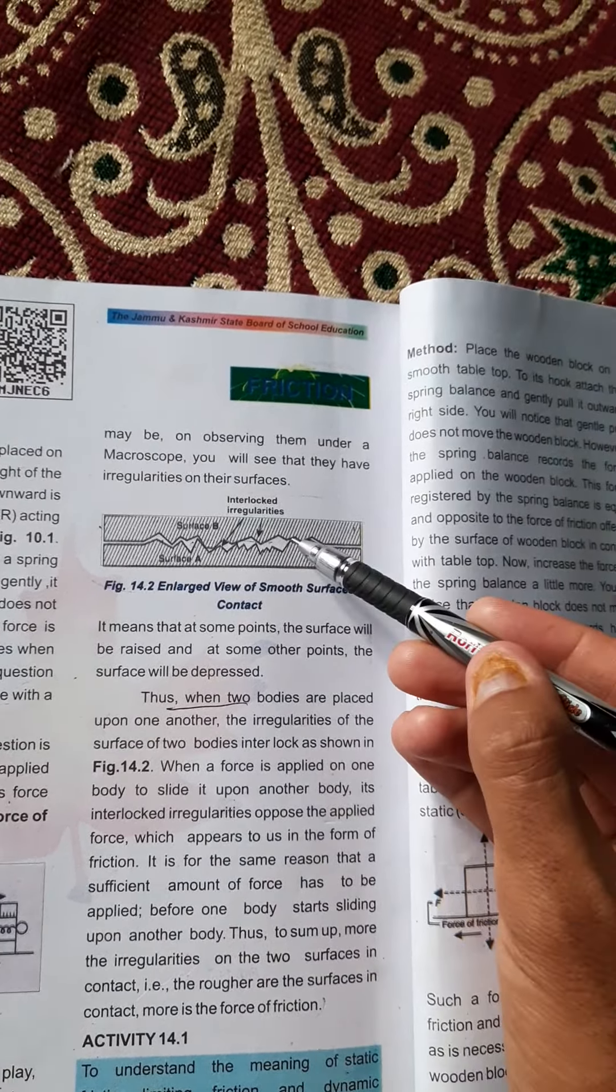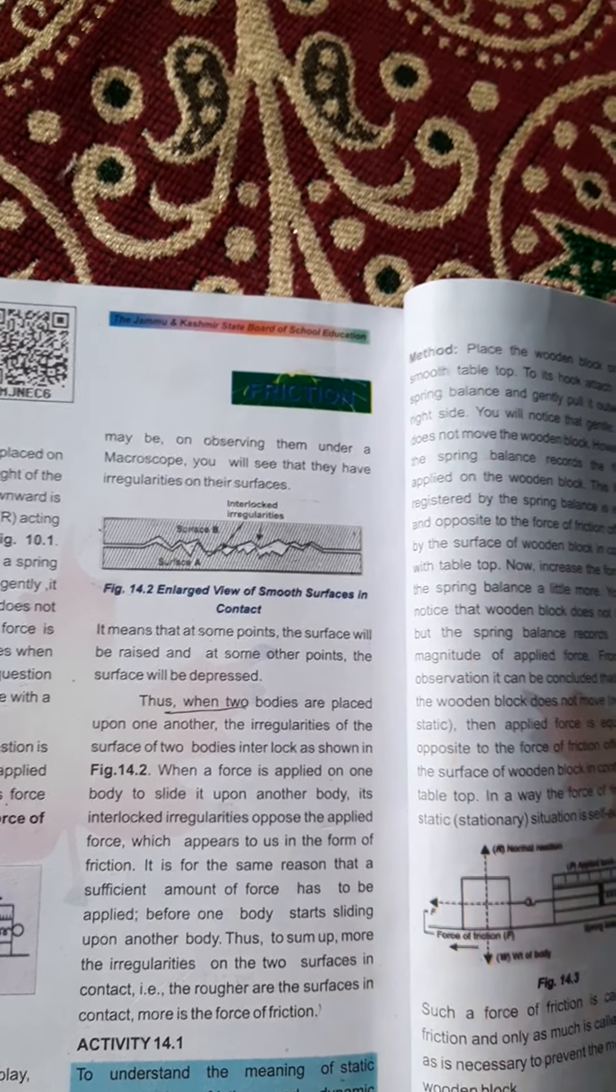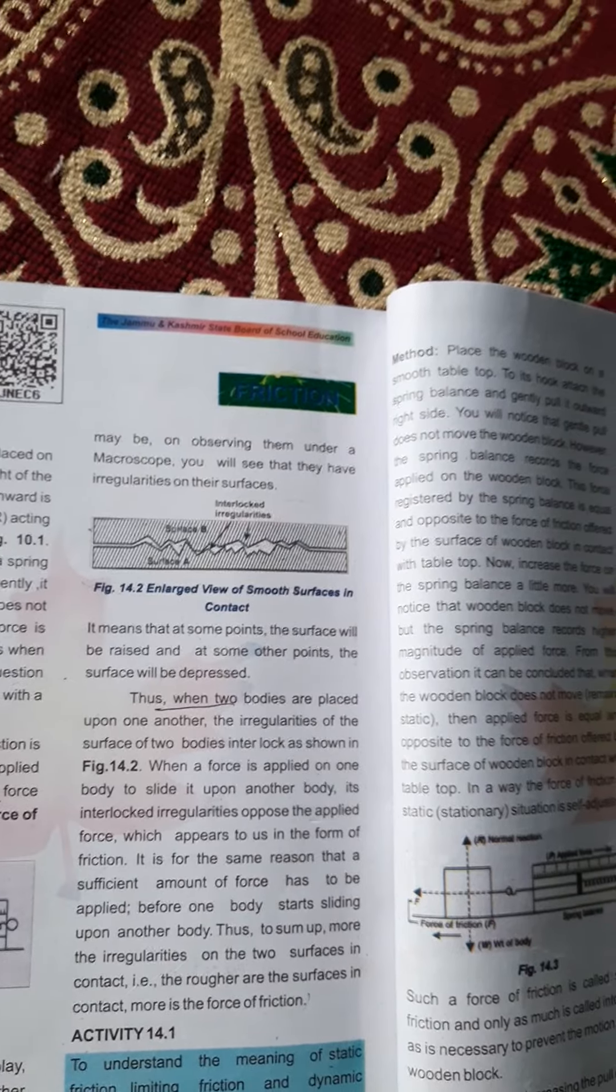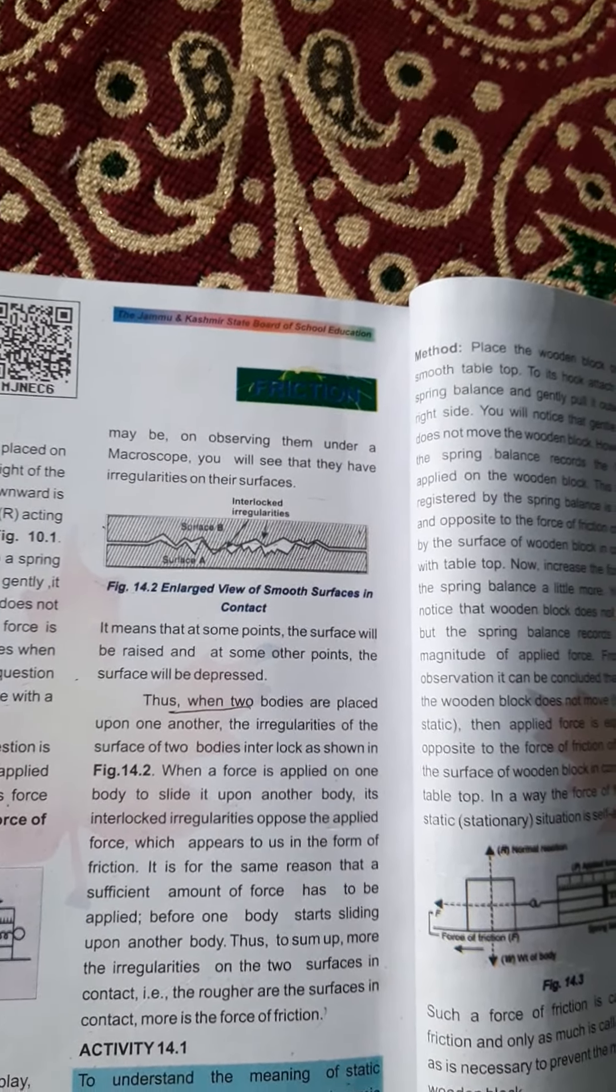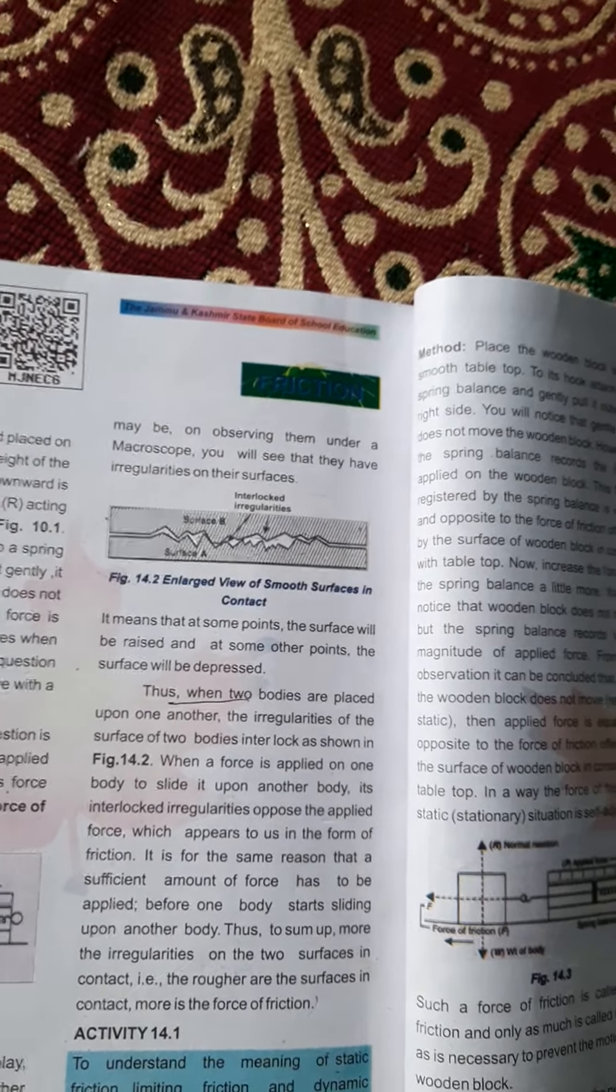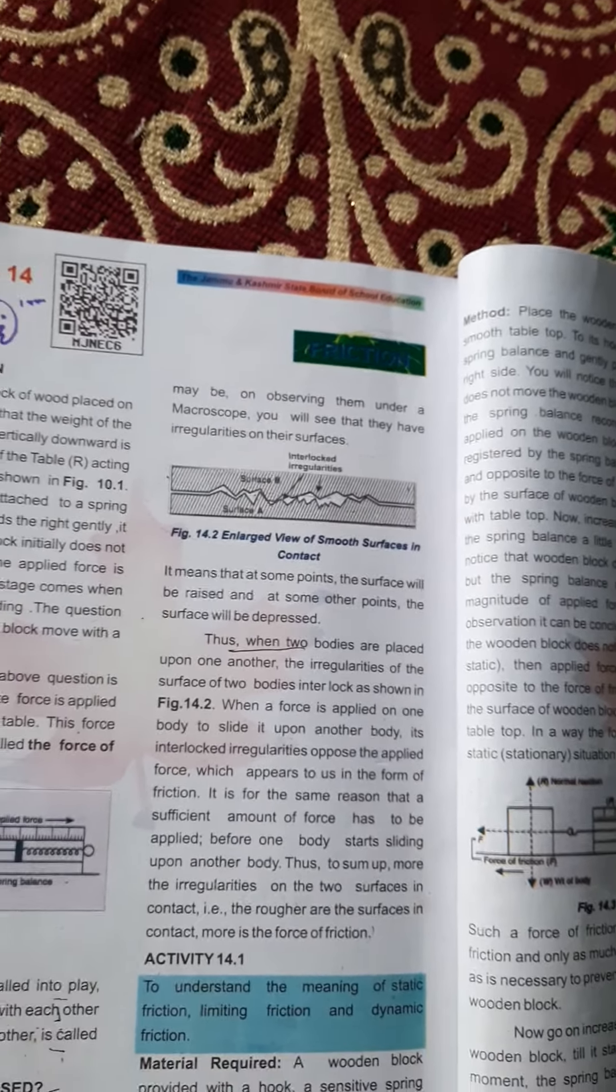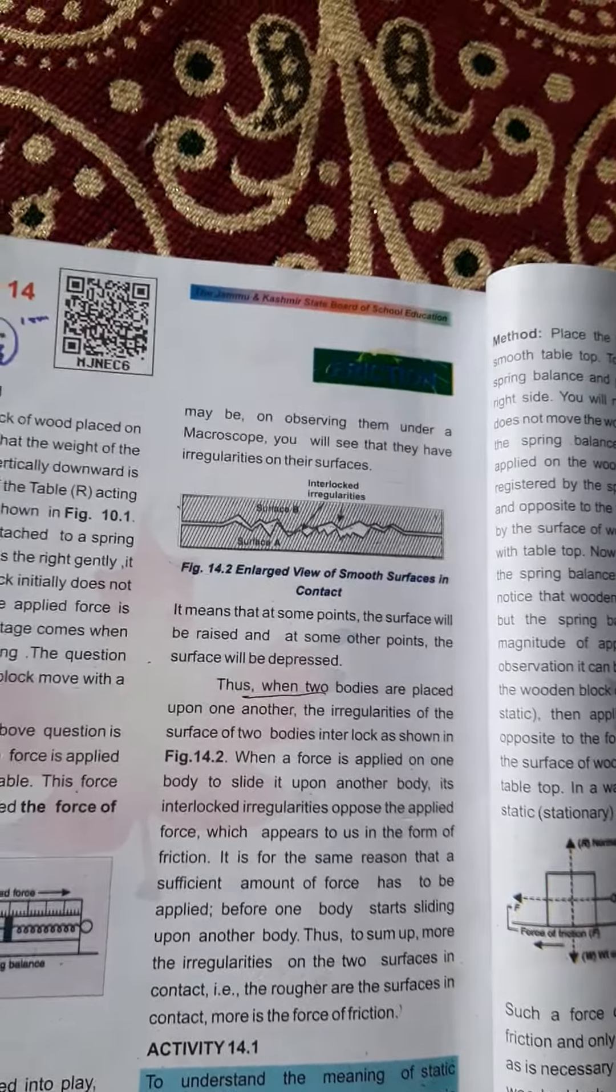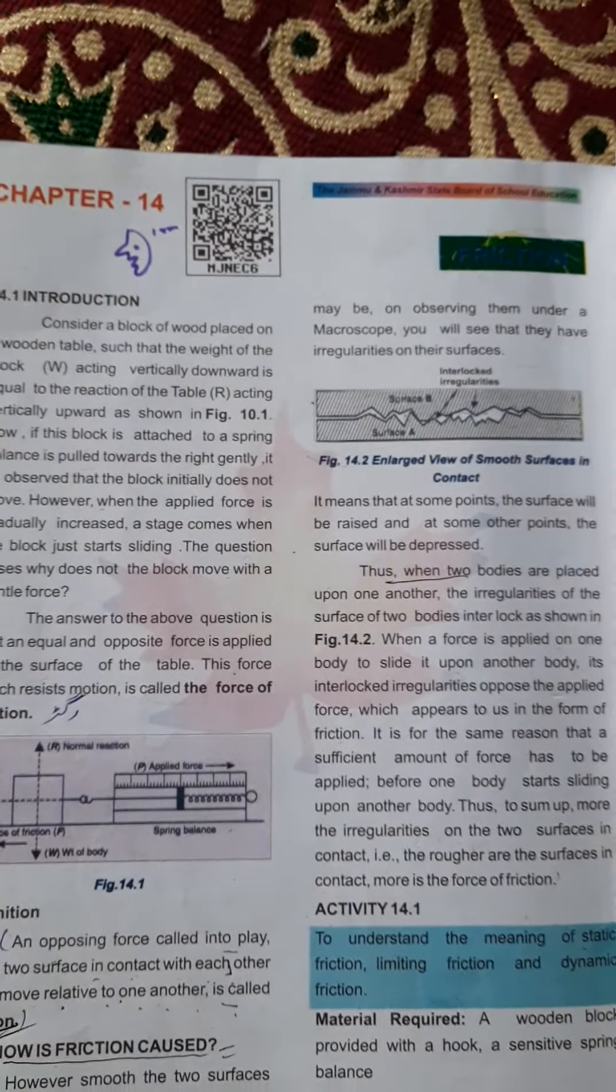جس میں irregularities ہوتی ہے یہاں سے یہاں یہ oppose کریں گے یہ اس کو آگے جانے نہیں دیں گے which appears to us in the form of friction. یہی ایک قسم کی friction ہمارے درمیان ان دونوں کے درمیان پیدا ہو جاتی ہے. آج کے لئے اتنا ہی شکریہ.